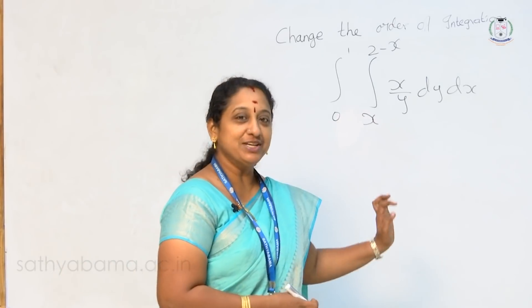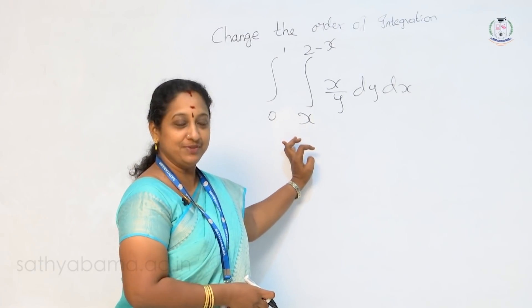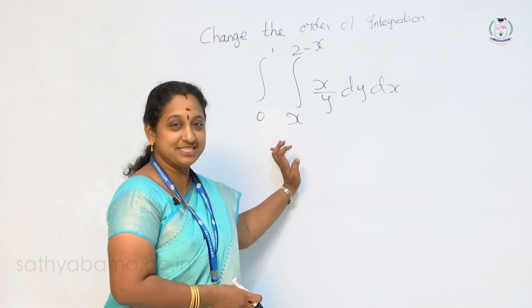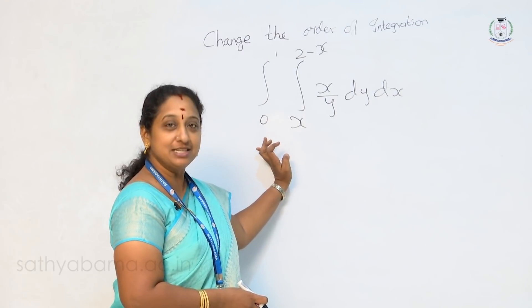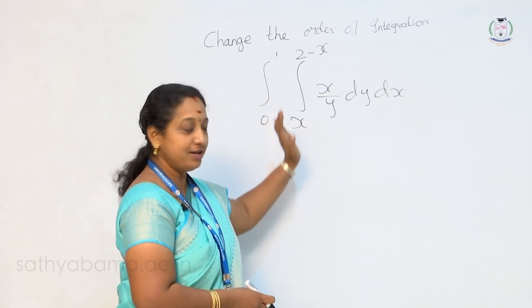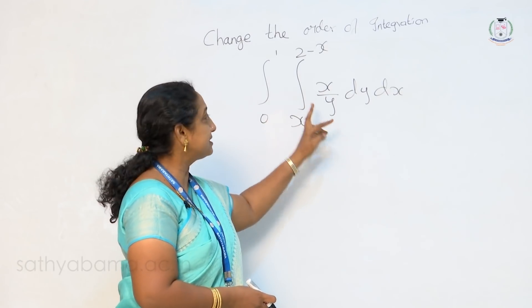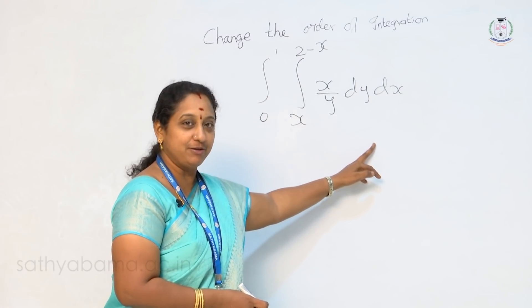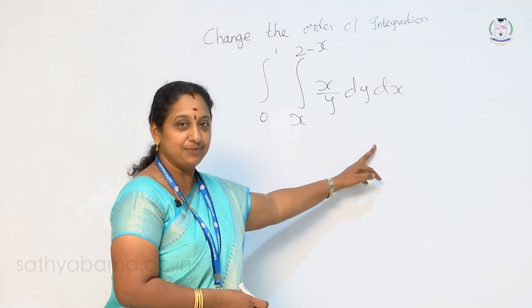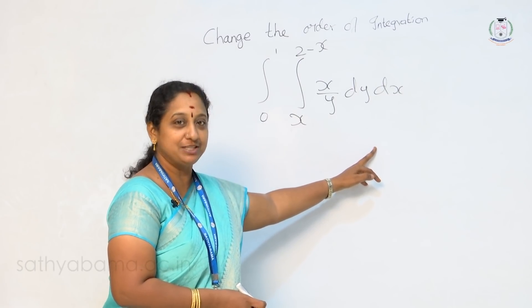Before getting into the problems, let me briefly summarize how to integrate the double integration. Here students, we will see the first problem. The problem is: change order of integration — double integral, 0 to 1, x to 2 minus x, x by y dy dx, and hence evaluate. Let me see how to evaluate this problem.